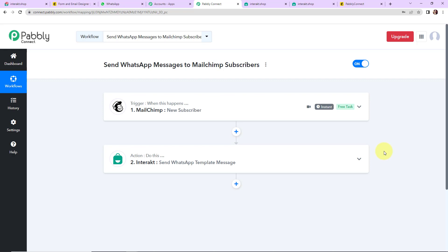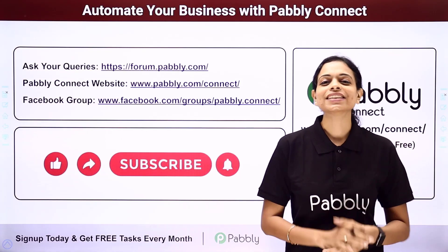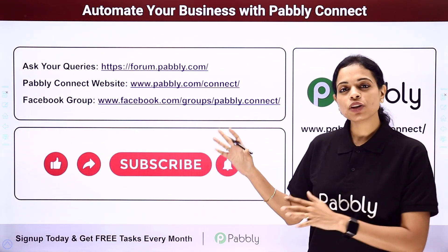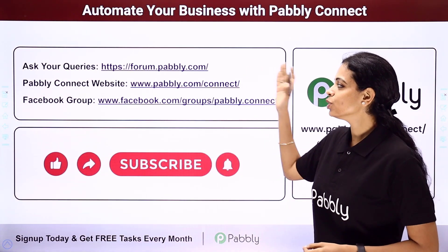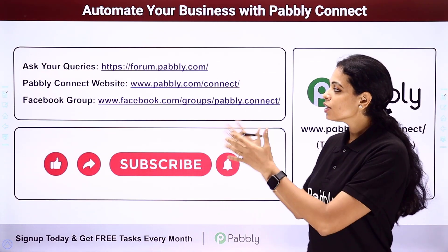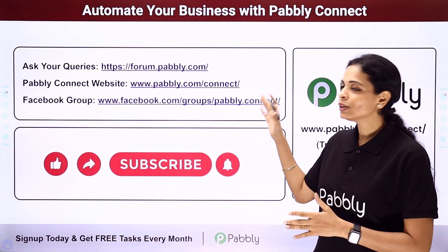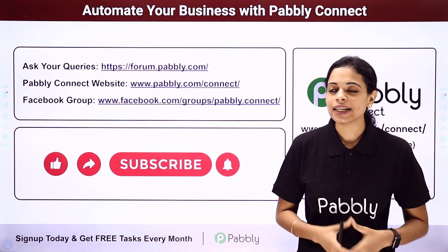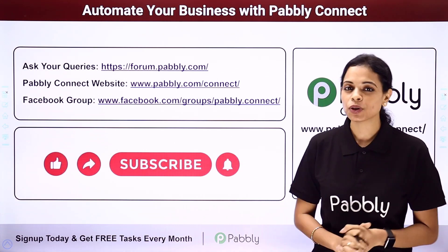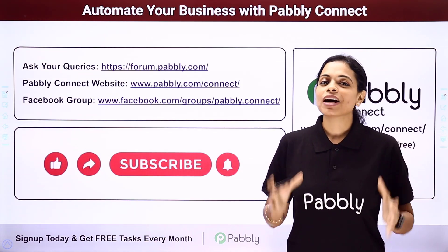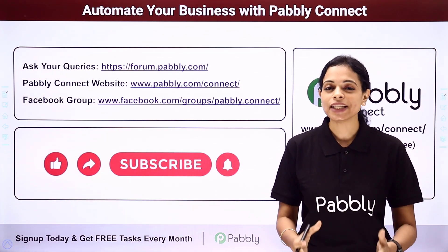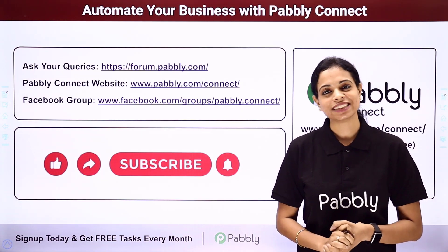Apart from this, if you have any specific integration to work on, you can always write to us. You can integrate multiple applications using Pabbly Connect software. To ask any queries, write at forum.pabbly.com. You can also visit our website at www.pabbly.com/connect for all details on latest updates, integrations, and applications. You can also visit our Facebook group. If you found this video helpful, do not forget to share it with your friends and colleagues so that they can also get into automation and make their life easy.